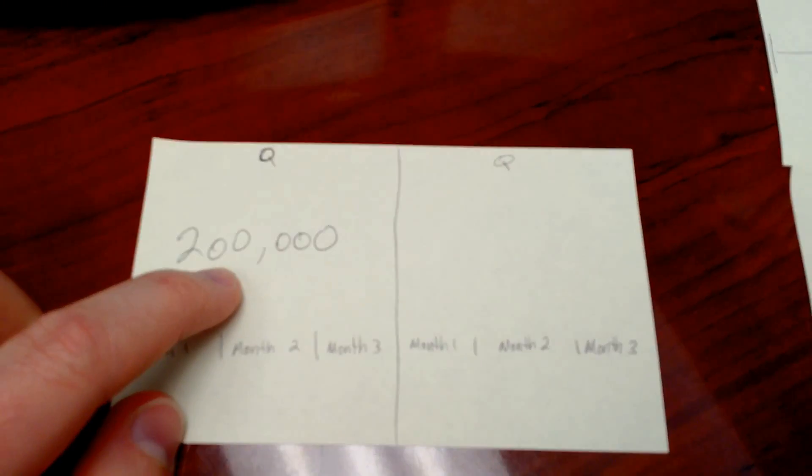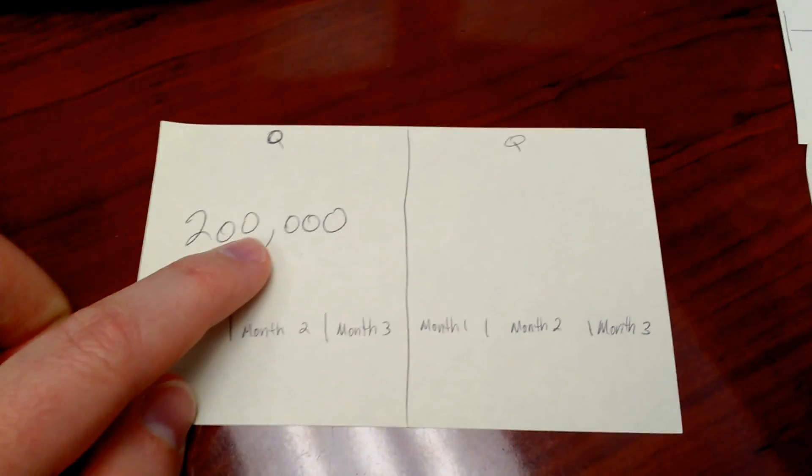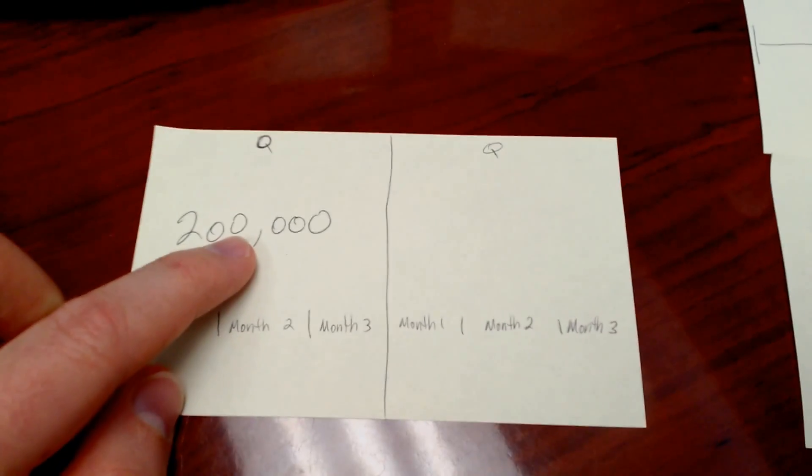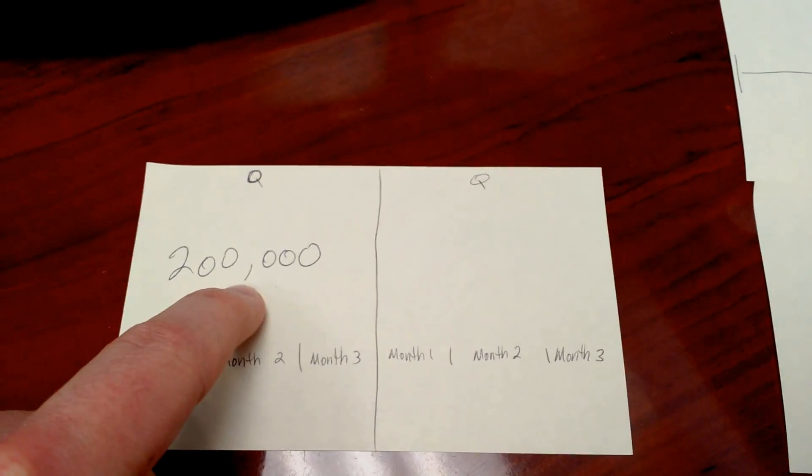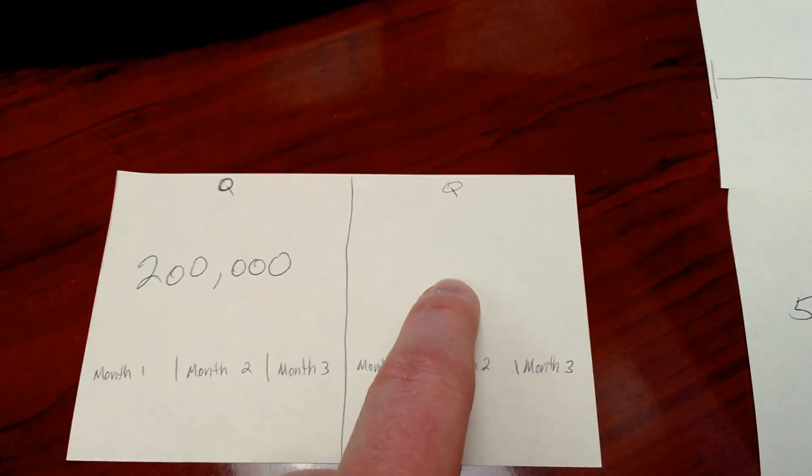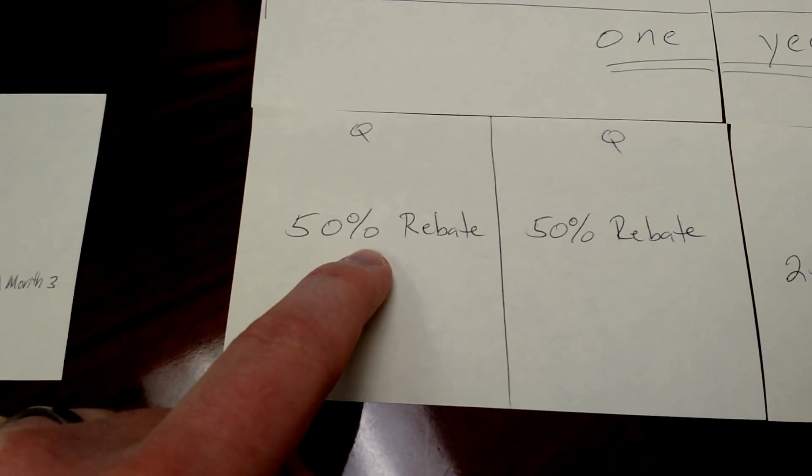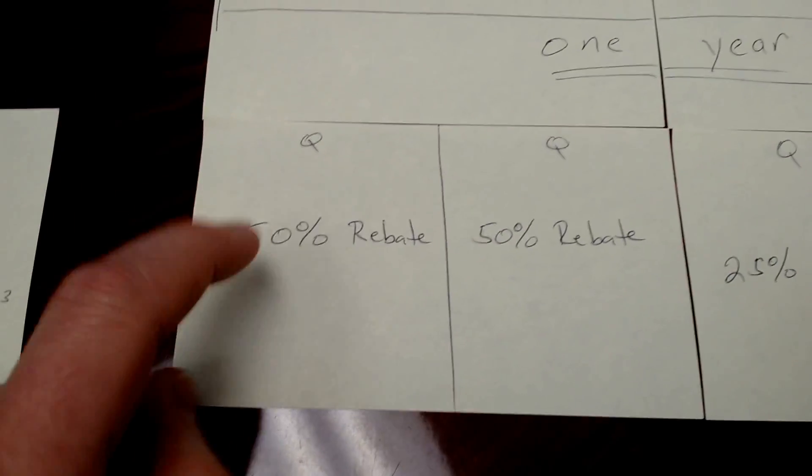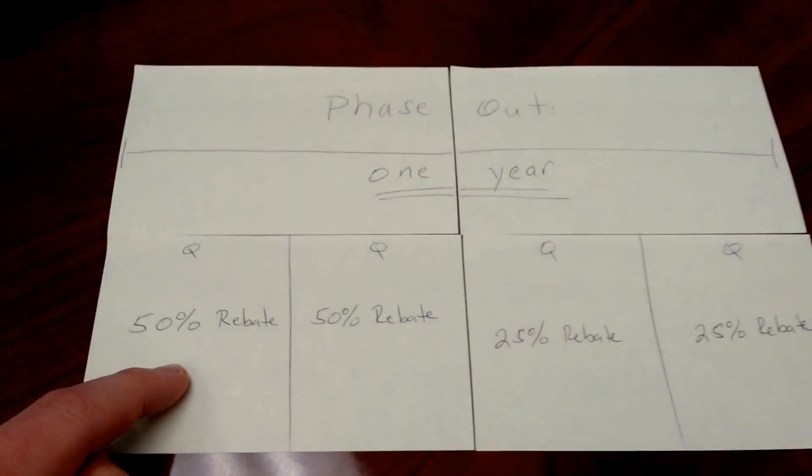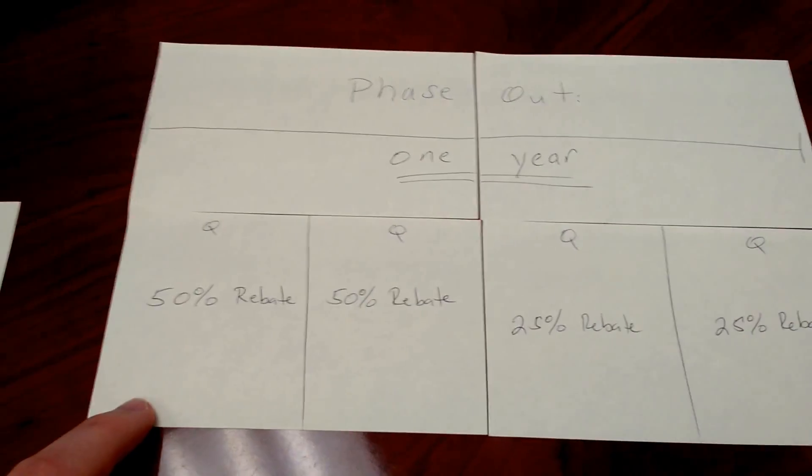Let's say Tesla reaches two hundred thousand vehicles in this quarter. That activates that verbiage I just read, which said that the second quarter after this occurred. So this is the first quarter after it occurred, and then we move over here to the second quarter. Now we're in the phase-out year.